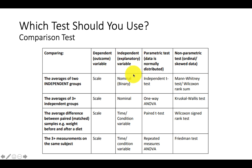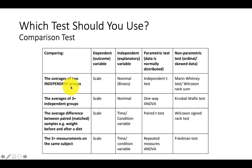Looking at your independent variable: if it's a nominal independent variable with a scale dependent variable, you can do an independent t-test. If the data is not normal or skewed, you use Mann-Whitney or Wilcoxon rank — these are for two independent groups. If you want to compare more than two independent groups, then you look at ANOVA. The non-parametric equivalent would be Kruskal-Wallis.